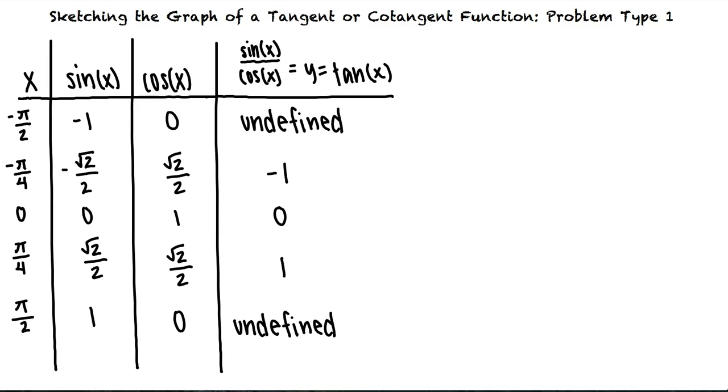We notice that y equals tangent x is undefined at x equals pi halves and x equals negative pi halves because these x values make cosine x zero and a function is undefined when the denominator equals zero.